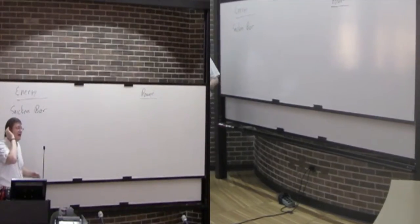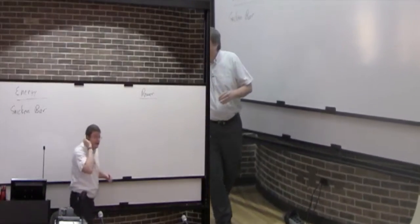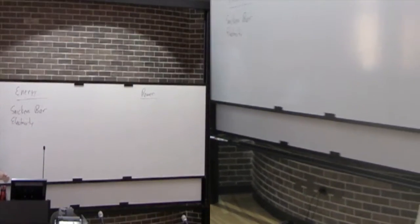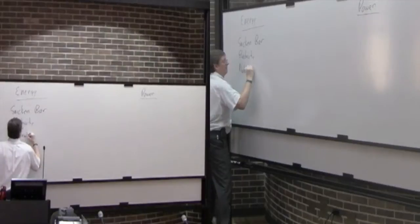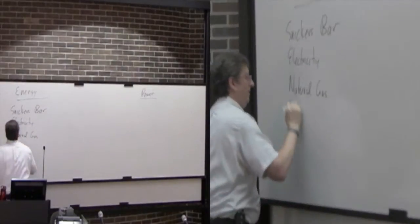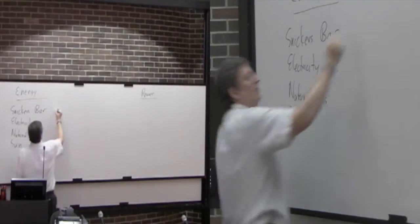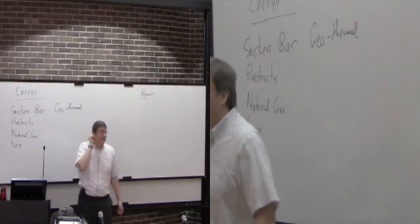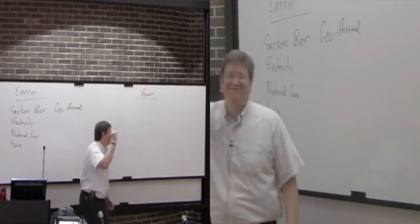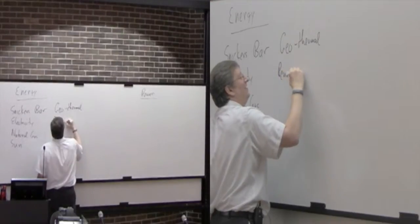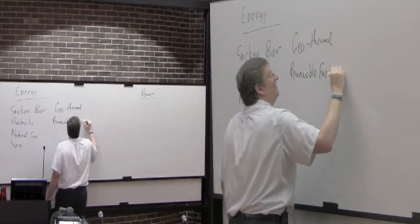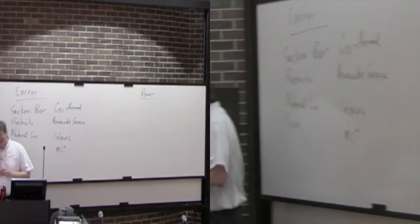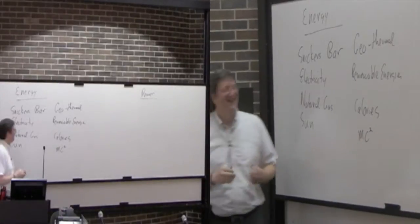Electricity. Electricity. [writes] Natural gas. Natural gas. Sun. [writes] Geothermal. Renewable sources. Renewable sources. Ah, renewables. Calories. [writes] MC squared. [writes E=mc²] Very good. All right, right back.